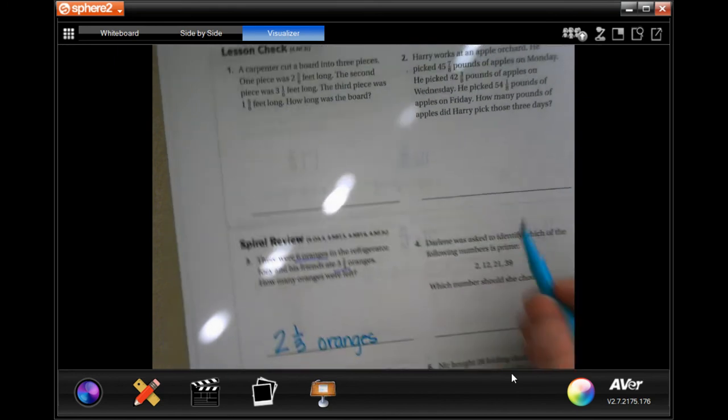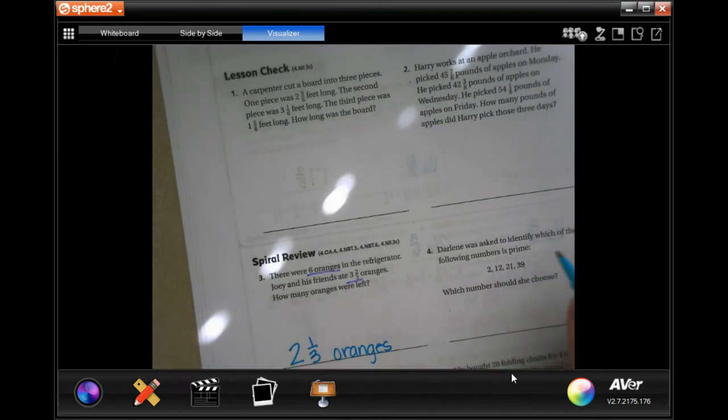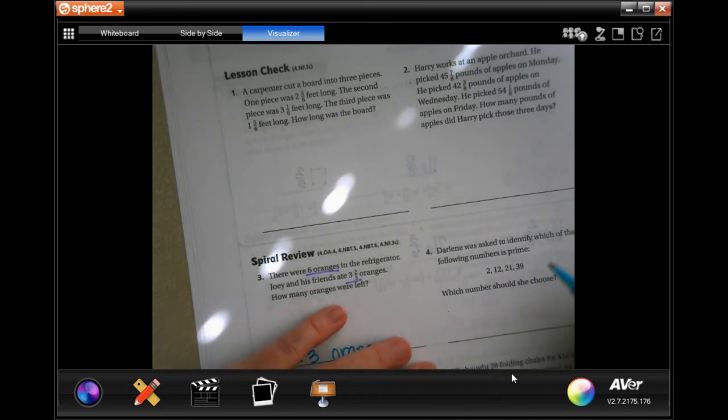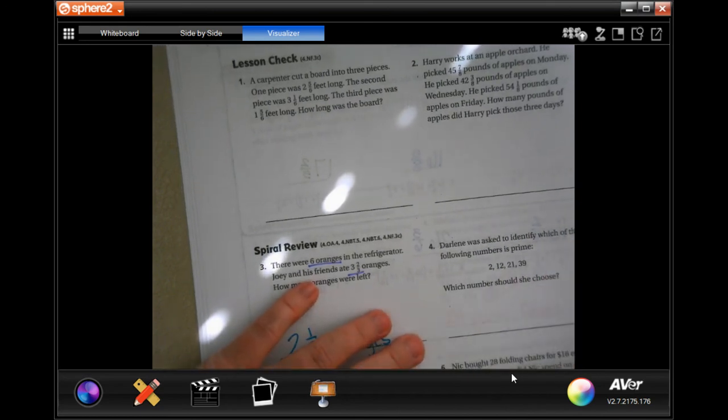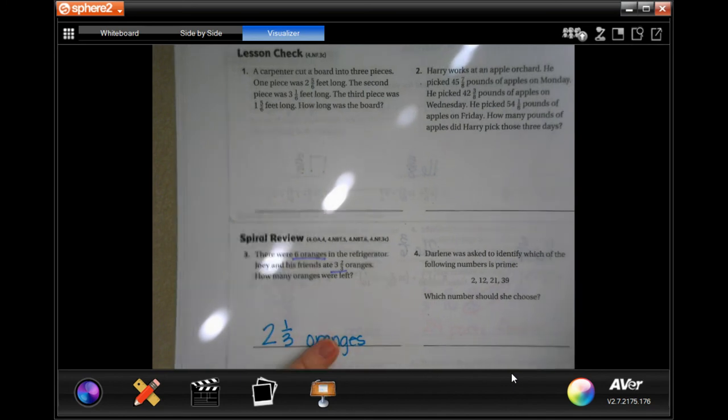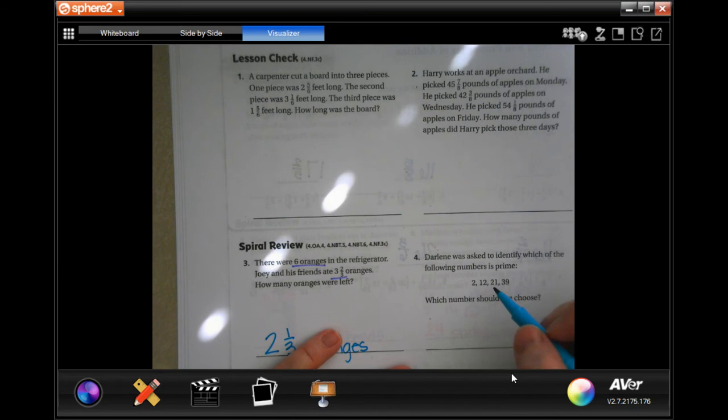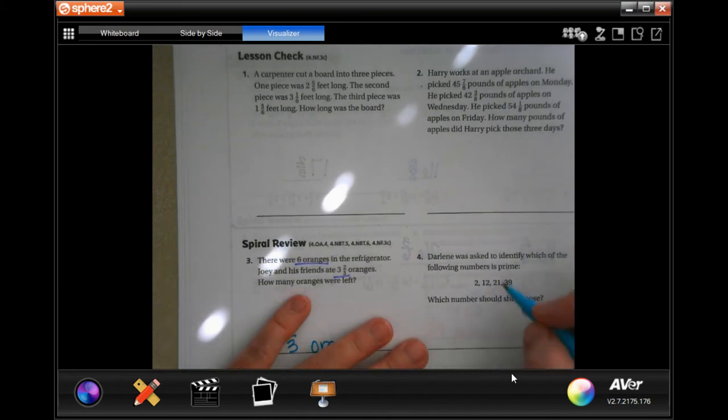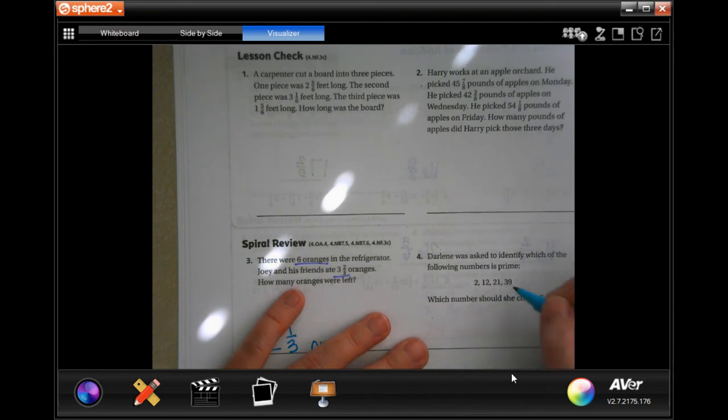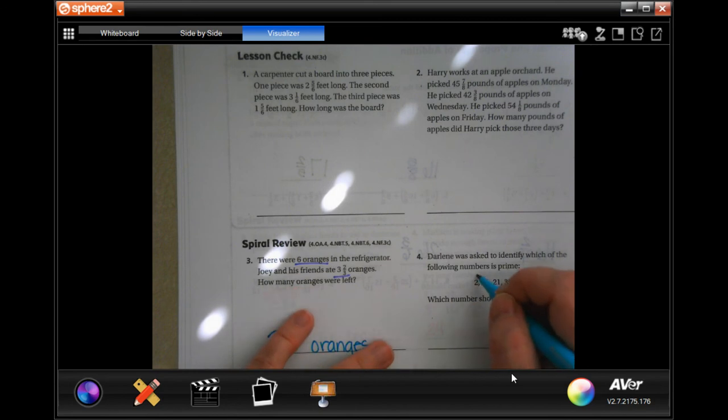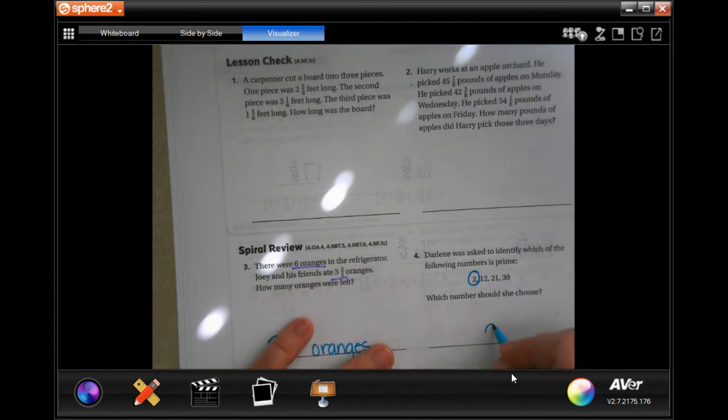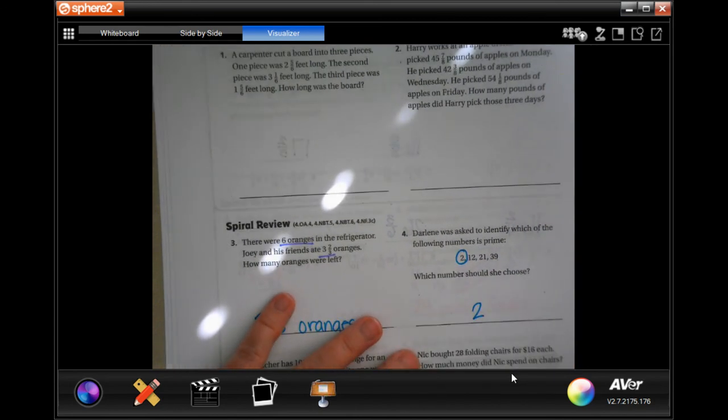Earlywin was asked to identify each of the following numbers as prime. So I can get to 12 by 1 times 12, or 2 times 6. I can get to 21 by 3 times 7. 39, I can do 3 times 13. Well, 2 is the only prime number there because it's the only number that can only be multiplied by itself and one to get to it.